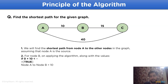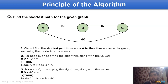Let's take node b first. Applying the algorithm with the values: if 0 — the position of a — plus the target node attribute value of 10 is less than or equal to infinity, which is the initially assumed value, this statement stands true. So the distance from node a to node b becomes 10. For node c, that would be 0 plus 40, which is the direct connection from node a to node c, and this is less than infinity — so the distance from node a to node c is 40.